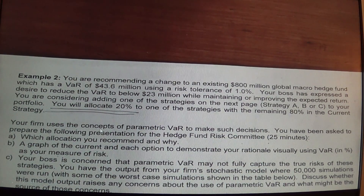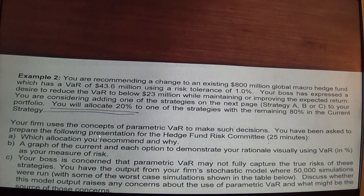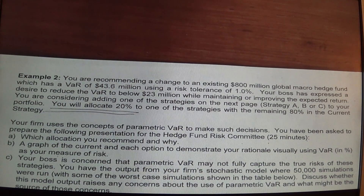To do this, the first question the fund committee has asked is: which of these strategies would you recommend — A, B, or C — and why? To do that, we need to get expected return, expected standard deviation, and then using expected standard deviation, we'll get the value at risk of the portfolio at a 1% risk tolerance.